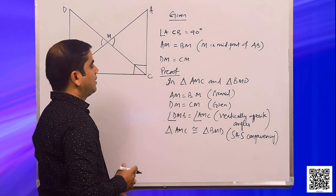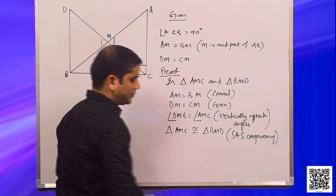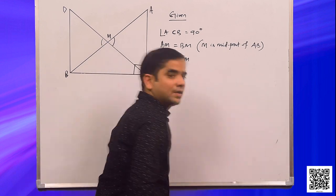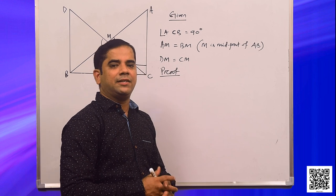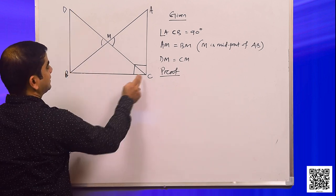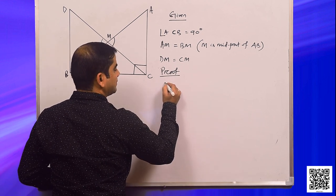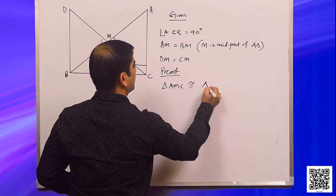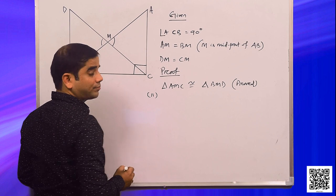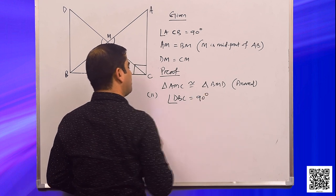We have proved the first bit: triangle AMC is congruent to triangle BMD. Let us discuss the second bit — angle DBC is a right angle. We need to prove angle DBC is equal to 90 degrees. If we can prove that triangle DBC and triangle ACB are congruent, then angle DBC will be the corresponding angle to angle ACB, which is already given as a right angle.